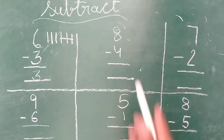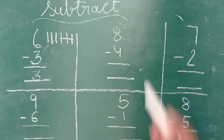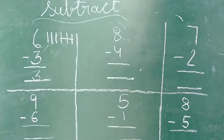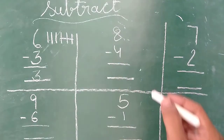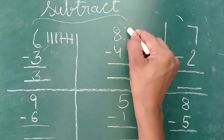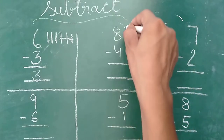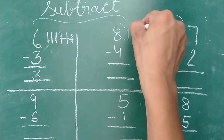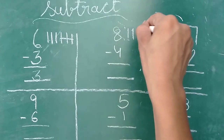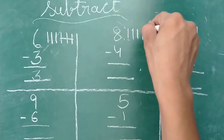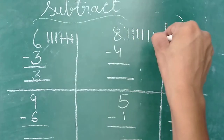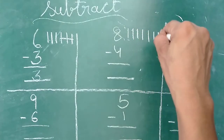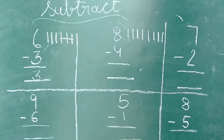Next dekhiye. Yee kitna hai? Eight. Very good. Toh kitni lines draw karenge? Eight. Count kijiye. One, two, three, four, five, six, seven, eight. Kitni lines draw ki? Eight lines draw ki.